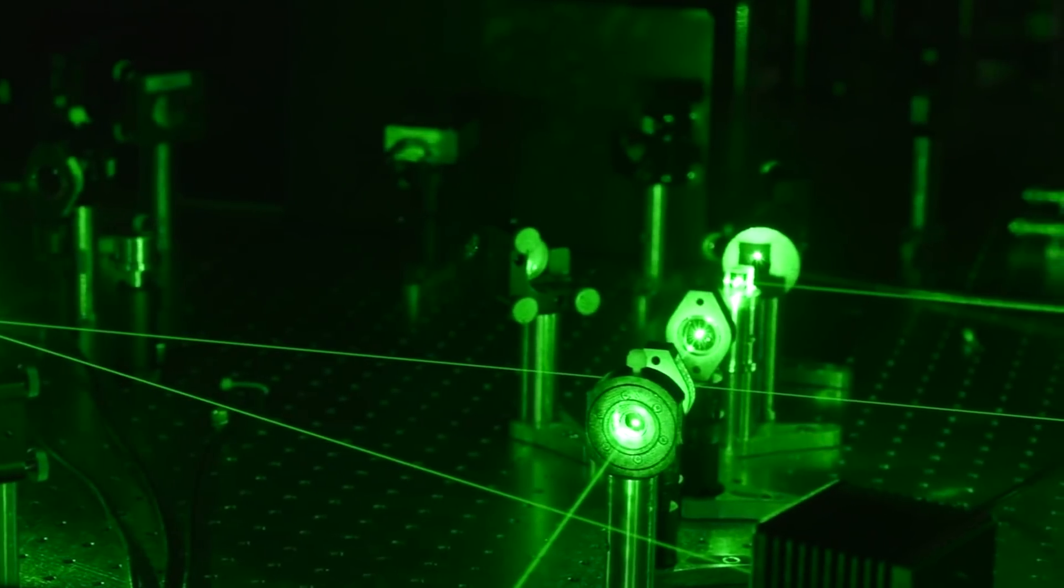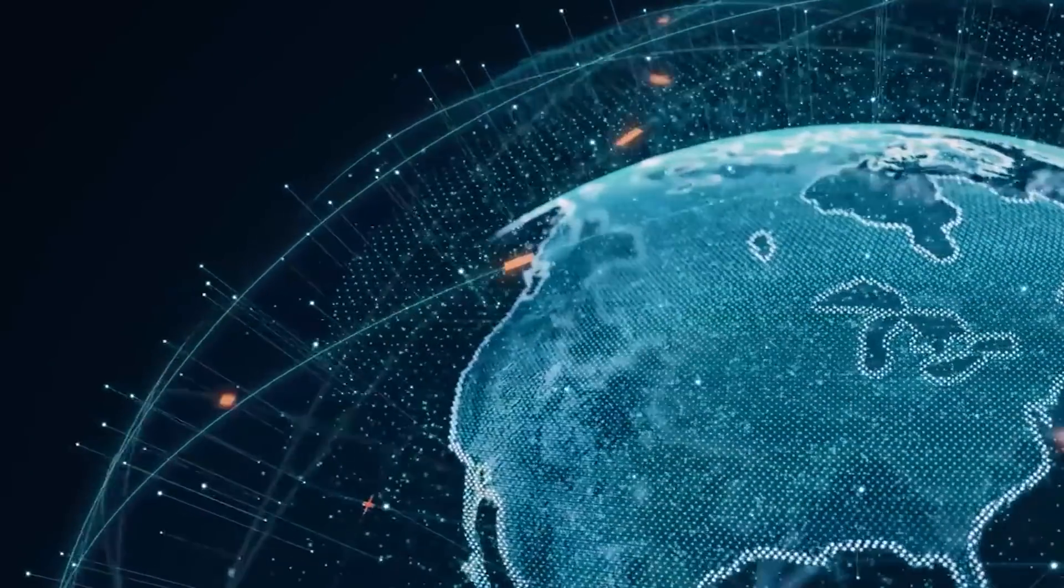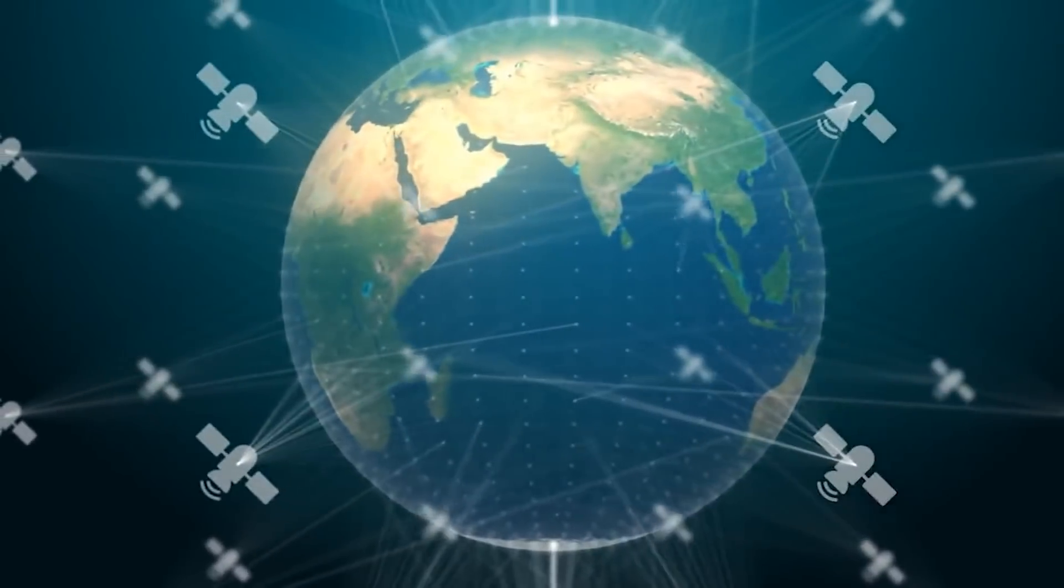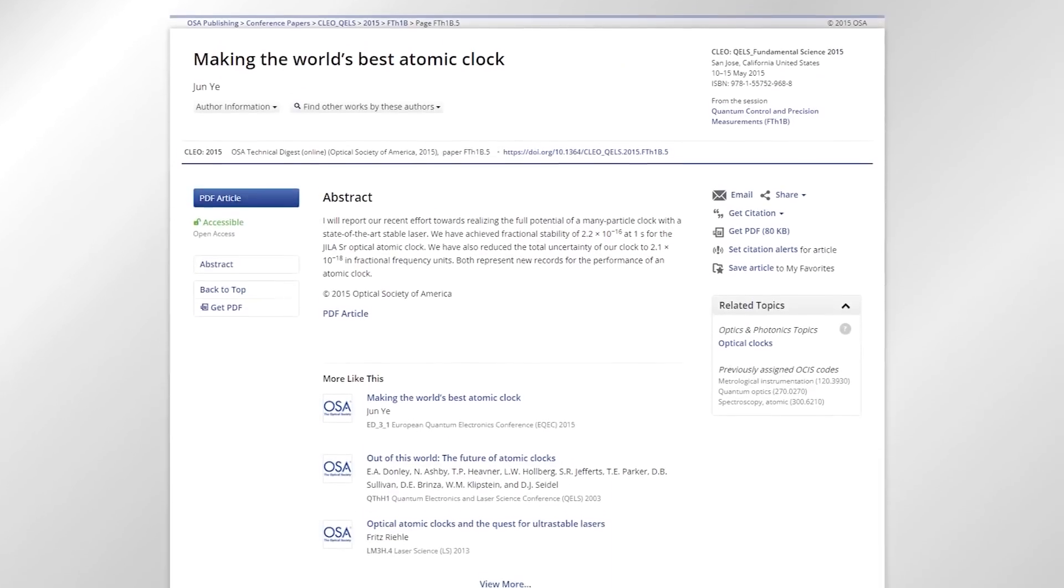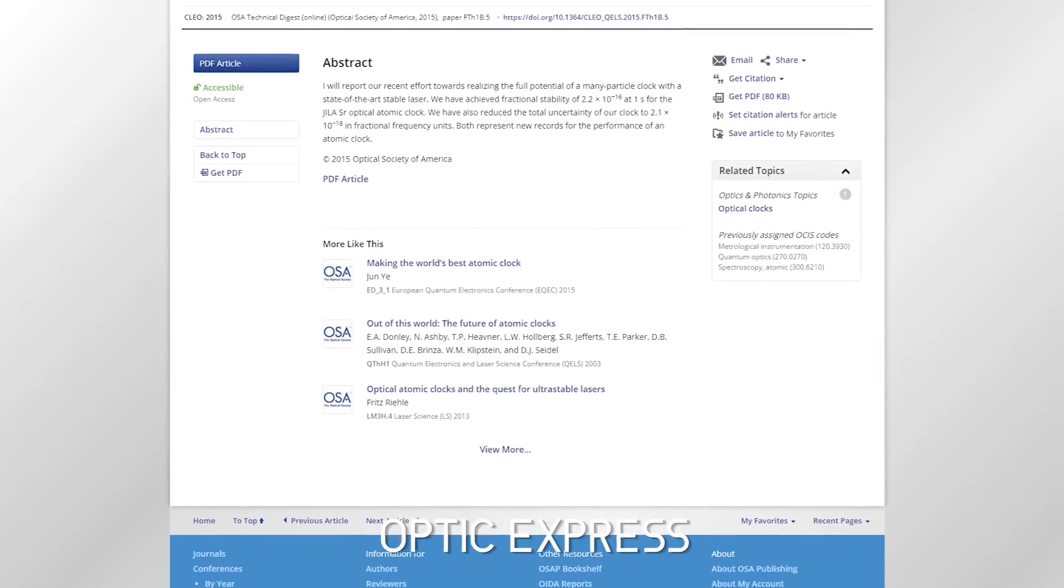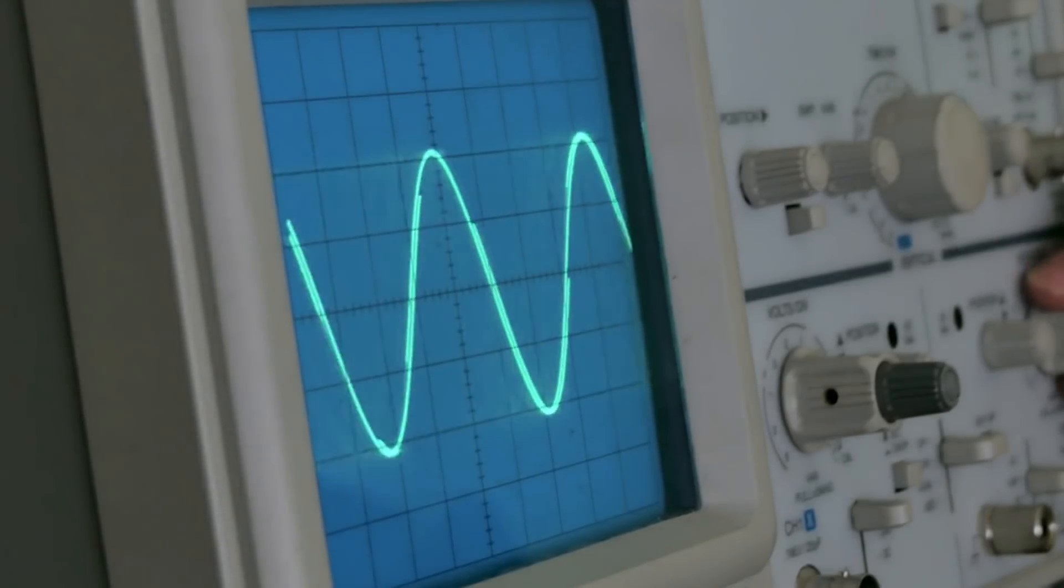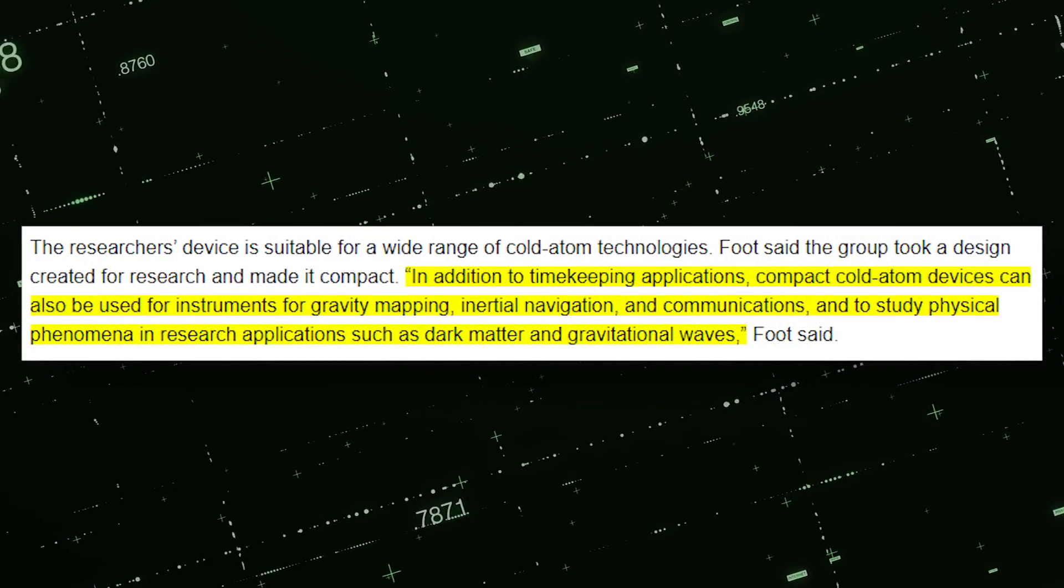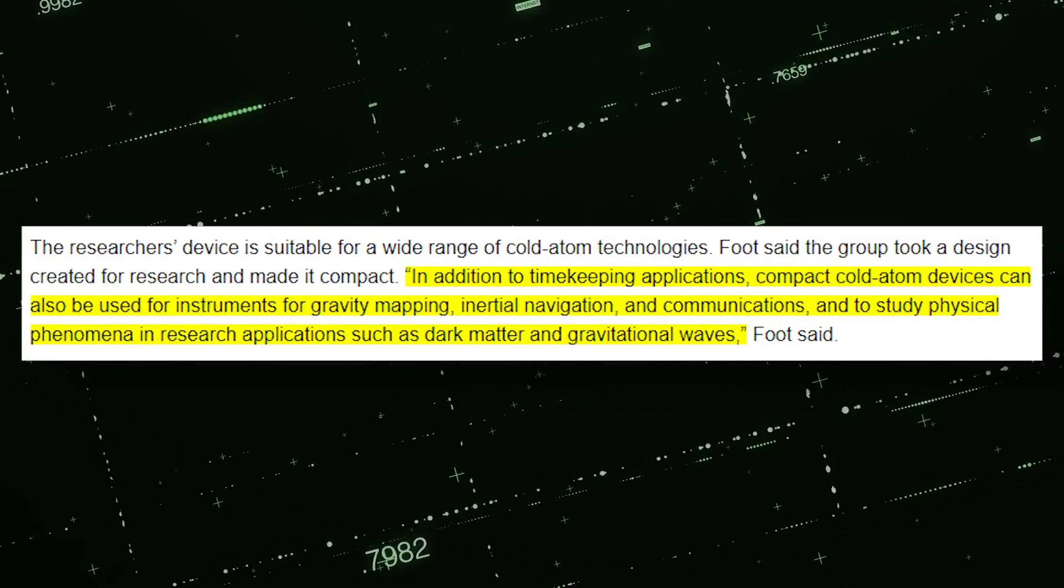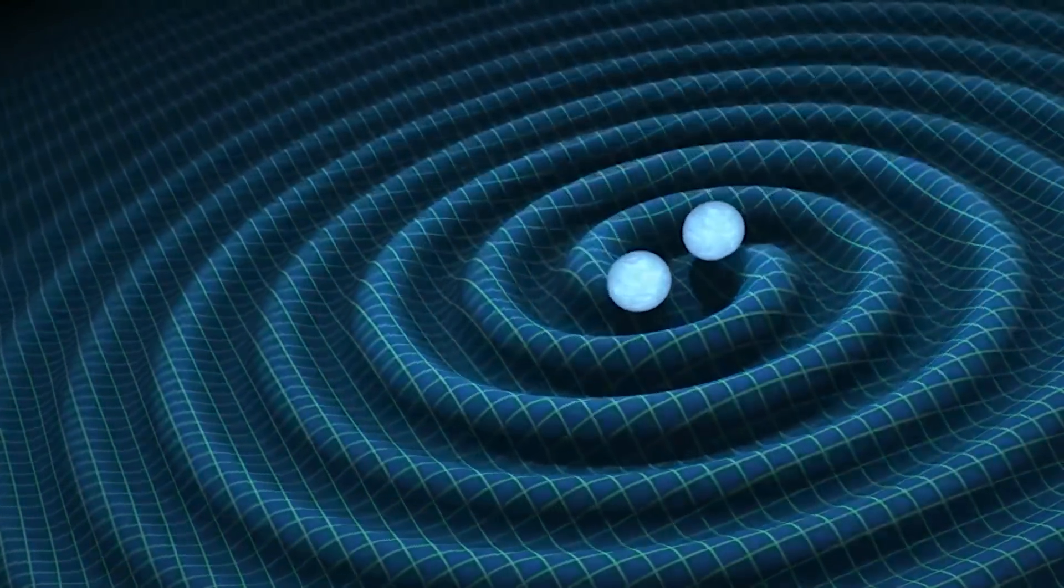Compact atomic clocks that can be deployed on a greater scale, perhaps all the way to space, will provide more rigidity in communication networks because they can maintain accurate timekeeping even in the event of a network disruption. According to a paper published in the journal Optic Express, this new device will be applicable across a wide range of cold atom technologies. Apart from timekeeping purposes, the compact cold atom device can be used for inertial navigation, gravity mapping, and the study of physical phenomena in research applications such as gravitational waves and dark matter.